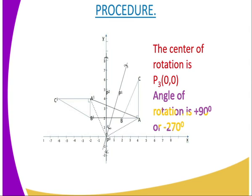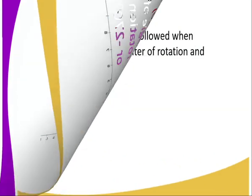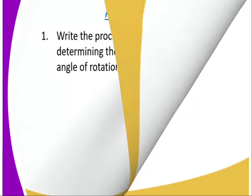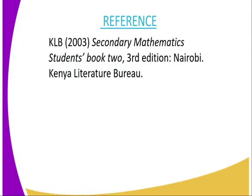The point where the two perpendicular bisectors meet is the center of rotation. That marks the center of rotation. I have exhausted all my explanation. I'm going to give you an assignment — the question reads: write the procedure followed when determining the center of rotation and the angle of rotation. For reference, you can refer to Secondary Mathematics Student Book 2, published by the Kenya Literature Bureau.